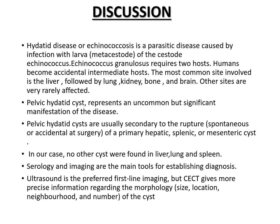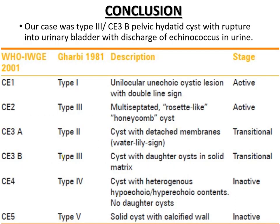Serology and imaging are the main tools for establishing the diagnosis. Ultrasound is the preferred first-line imaging, but CT gives more precise information regarding the morphology, size, location, neighborhood, and number of cysts. According to GERB and WHO classification, our case was type 3 CE3B pelvic hydatid cyst with rupture into the urinary bladder with discharge of echinococcus in urine.